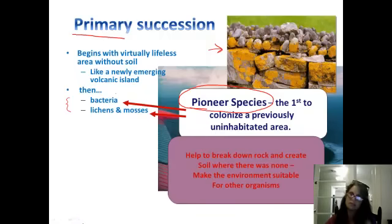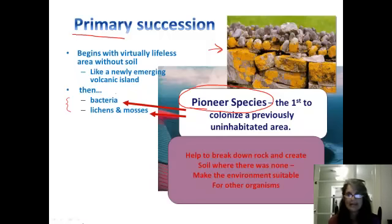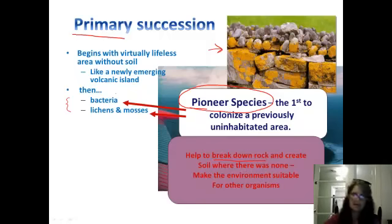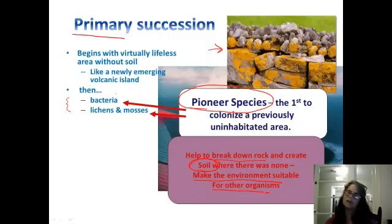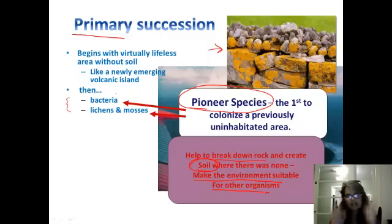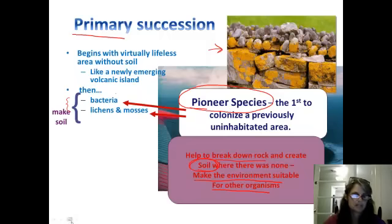One of the things pioneer species do is as they survive and go through life processes, they begin to help break down the rock upon which they're growing. As living things go through their life cycle, some die and leave biological material behind, and soil is created. That soil begins to make the environment suitable for other things. So pioneer species are simply critical — not only are they the first to come in and colonize, but they create the soil that is going to make it possible for other things to come in after them.